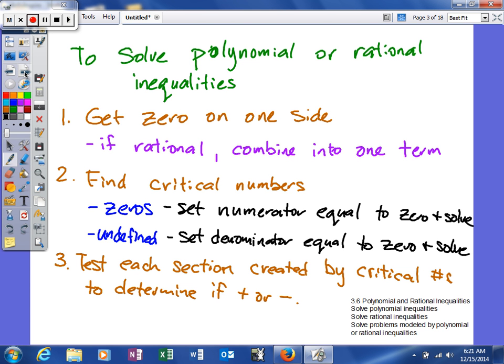After you get it set equal to zero, whether it's a polynomial or a rational inequality, we're going to find the critical numbers. And the critical numbers, they're basically two types: the values that make it zero and the values that make it undefined. The values that make it zero are going to be when you set your numerator equal to zero and solve. Now obviously if there isn't a fraction, you just set the whole thing equal to zero and solve. Or the values that make it undefined, we're going to set our denominator equal to zero and solve.